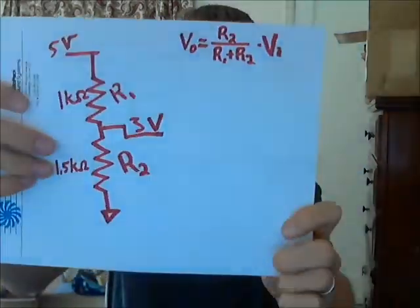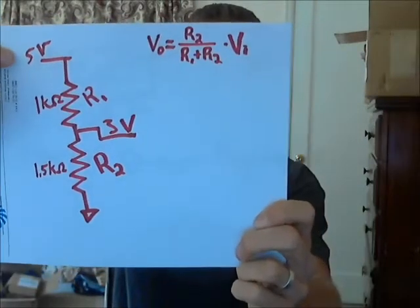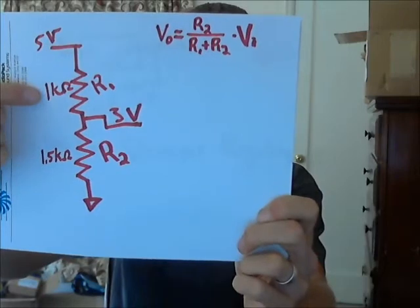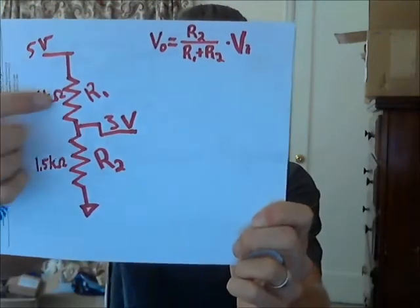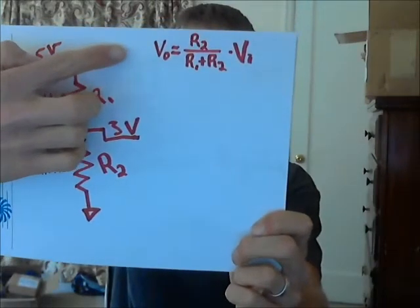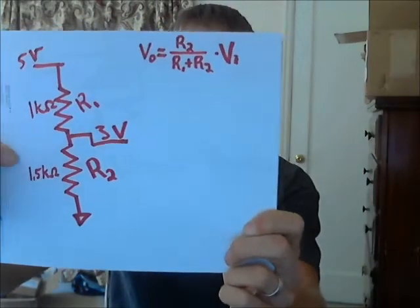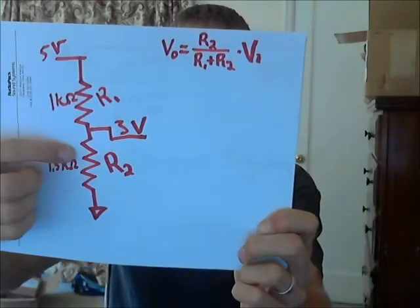Anybody that's seen a voltage divider equation, how you use resistors to divide down a voltage, would immediately say, I'll use a voltage divider. I can use two resistors and generate any voltage I want as long as it's lower than the input. So let's take a look at that solution. We have 5 volts coming in, going to a 1K resistor and then a 1.5K resistor. With a 1K and a 1.5K, you get 3 volts out.